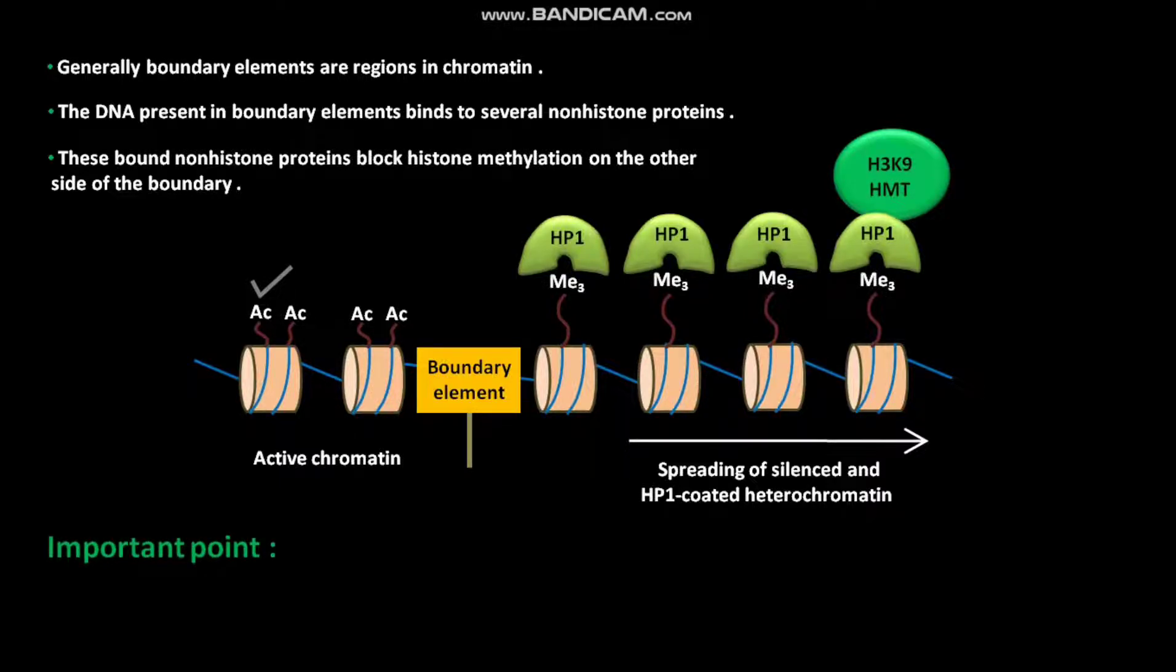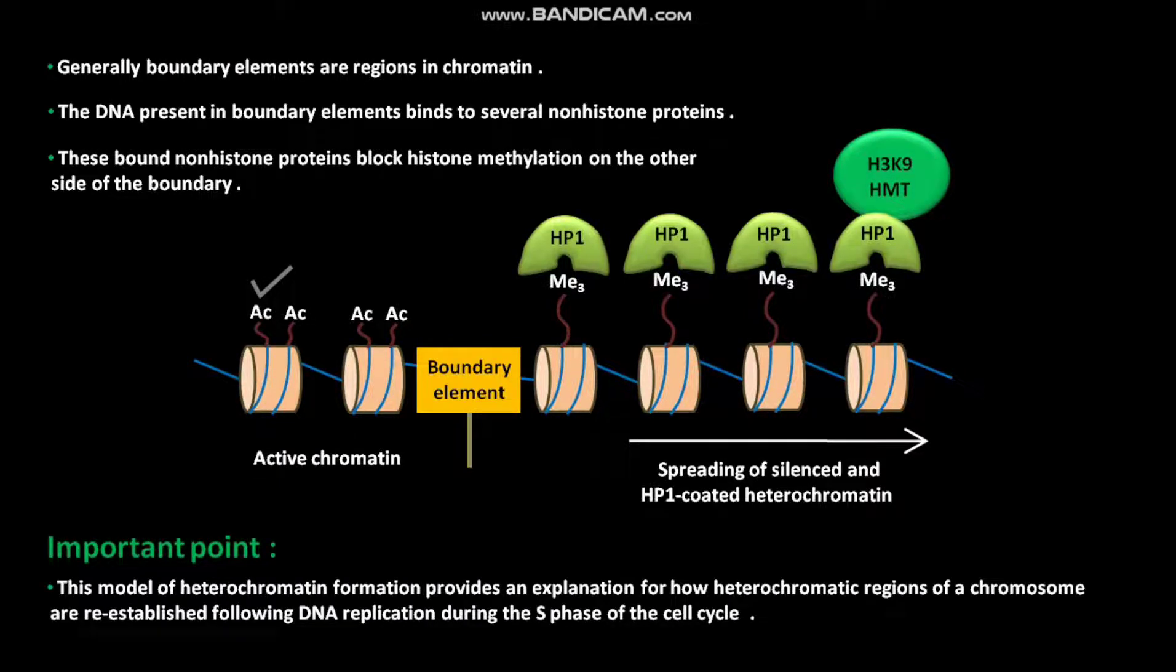This model of heterochromatin formation provides an explanation for how heterochromatic regions of a chromosome are re-established following DNA replication during S phase of the cell cycle.